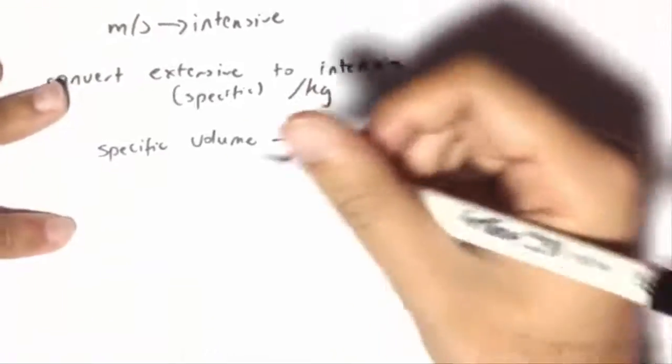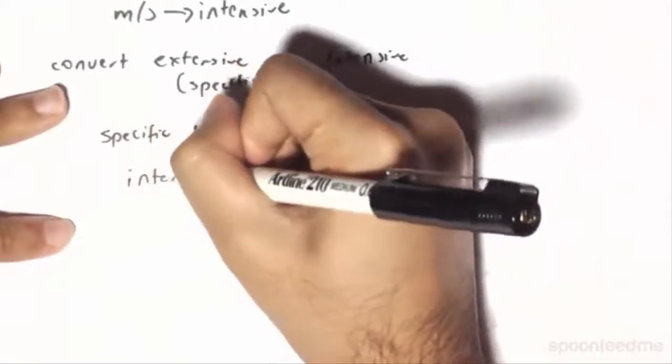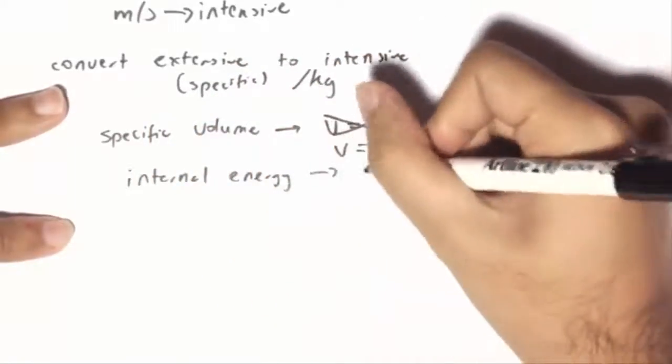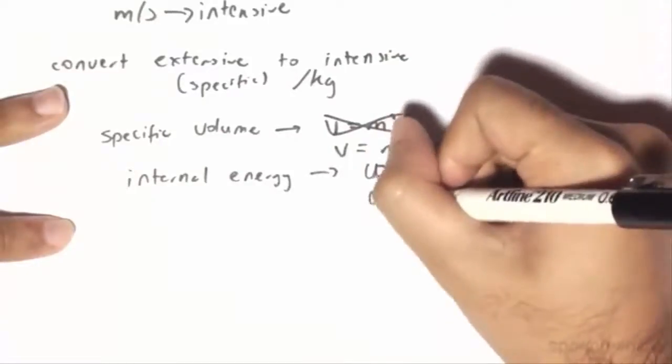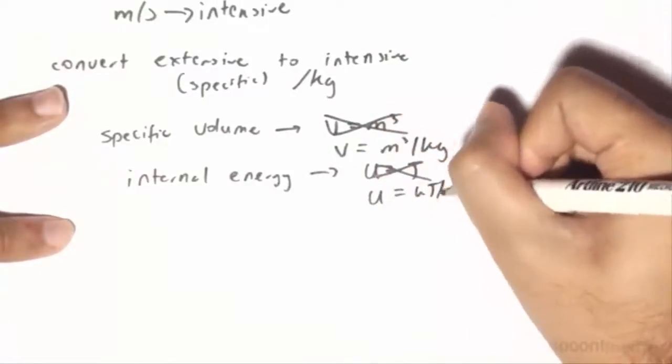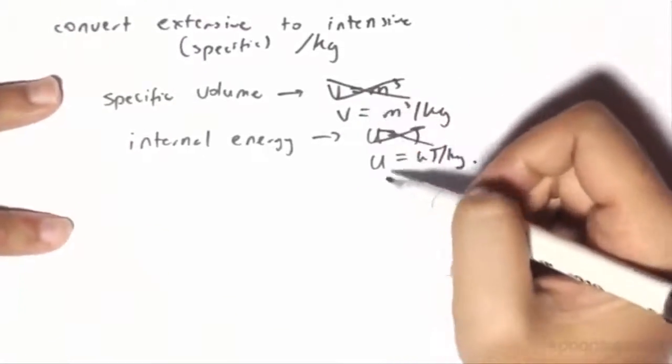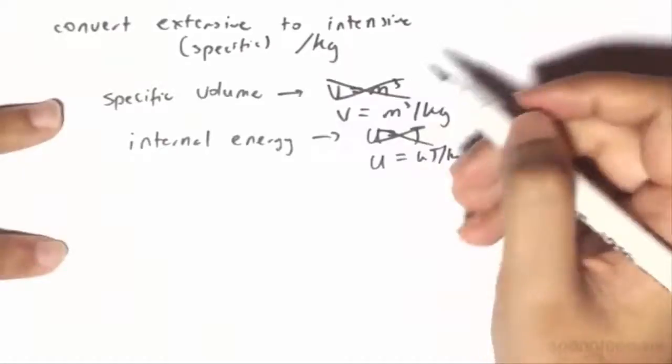For internal energy, for example, internal energy is denoted by the letter U. So instead of it being in joules or kilojoules, it will now be in kilojoules per kilogram. To denote the specific volume and specific energy and so on and so forth, we have to change this.